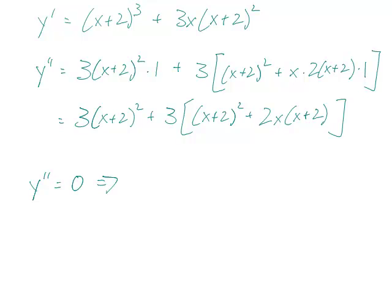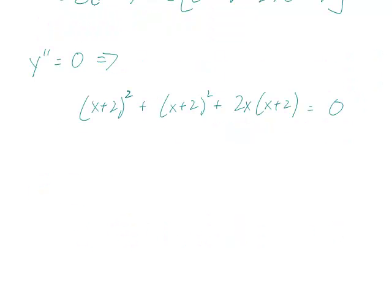So we can simplify this as 3x plus 2 squared plus 3 times x plus 2 squared plus 2x times x plus 2. And now if we set y double prime equal to 0, notice that there's a 3 in front of the first term and the second term which is the big term of the brackets. So we can actually just divide through by that 3 and not write it down.